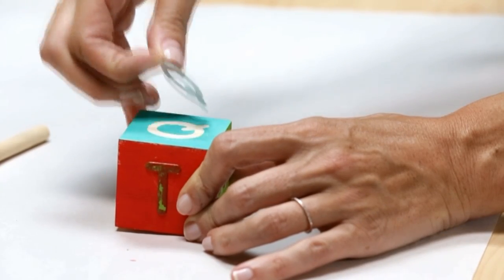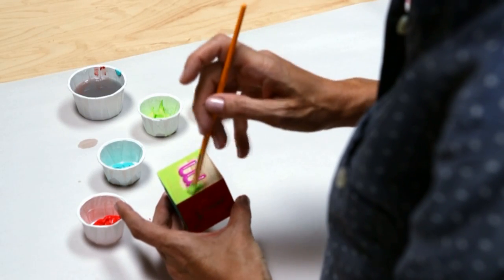Once the first three sides are dry you can peel off the stickers and then paint the other three sides.